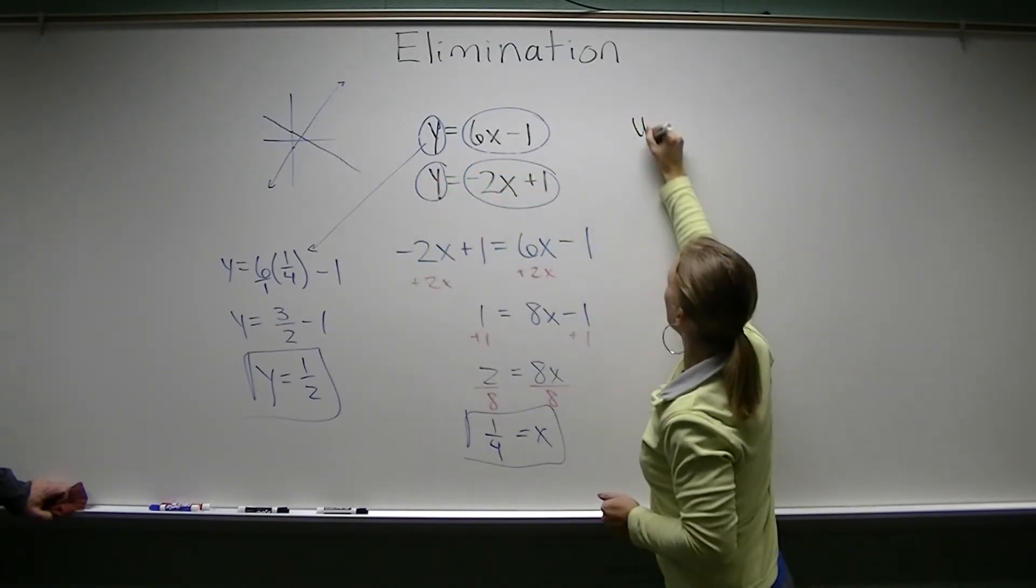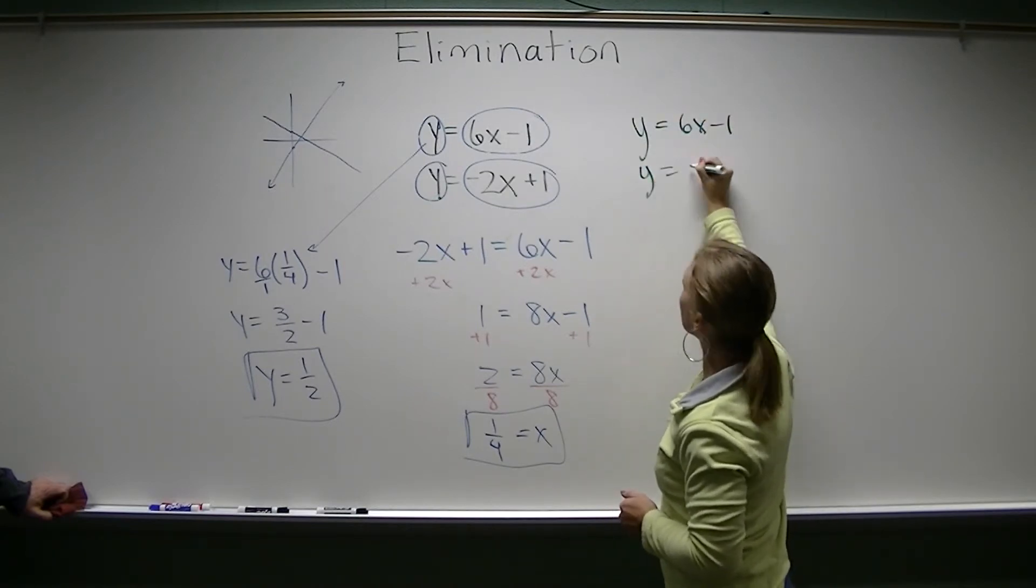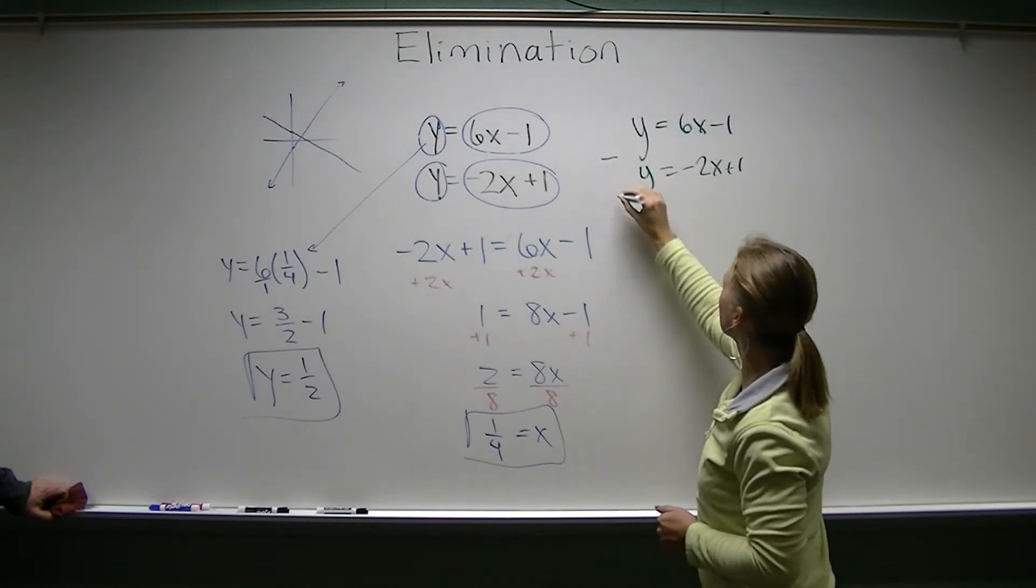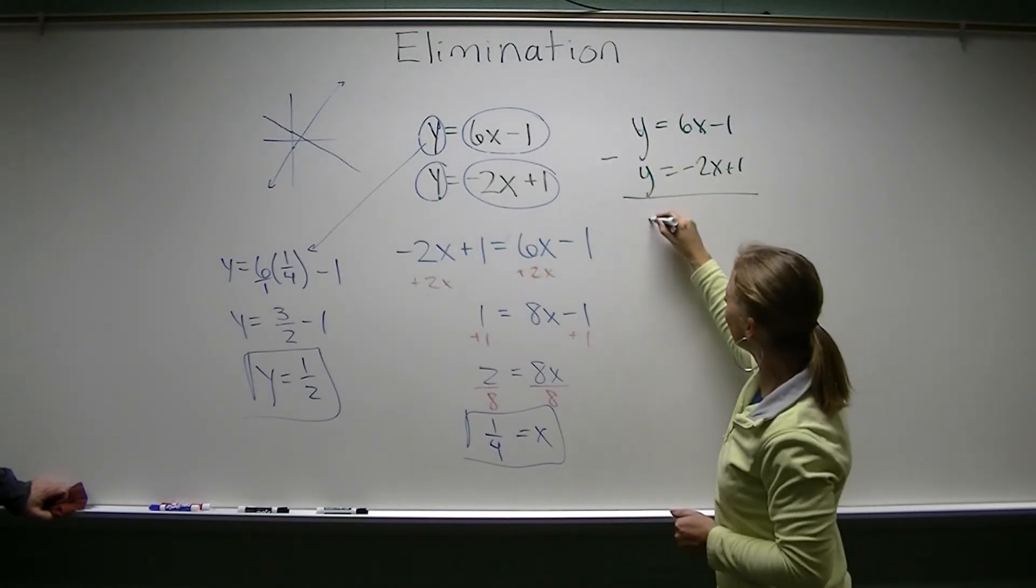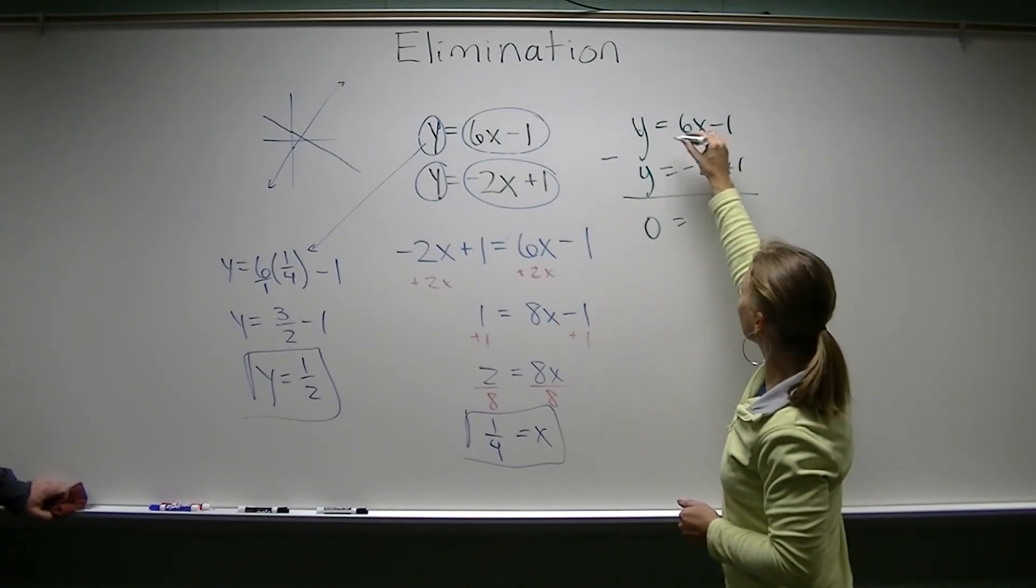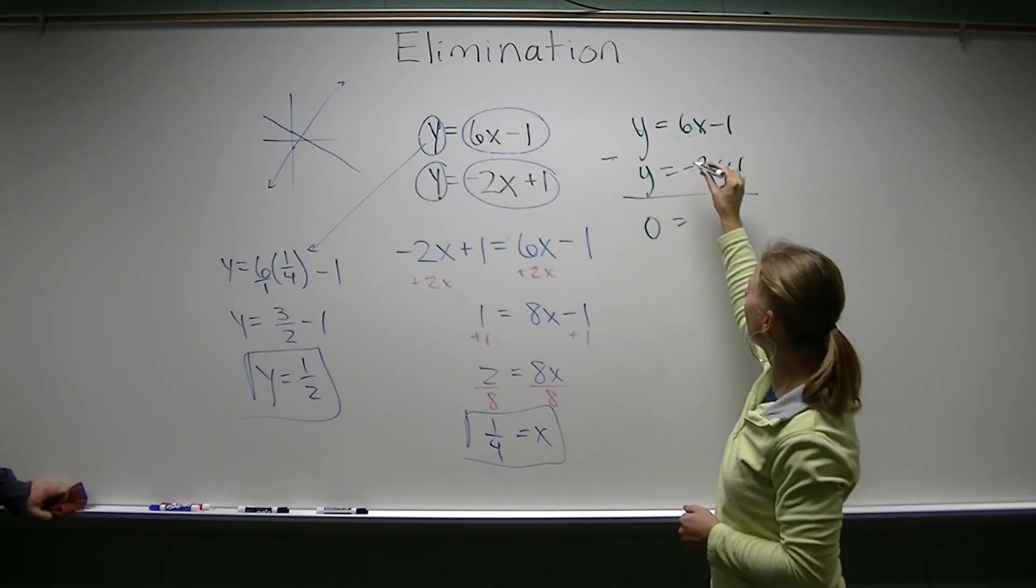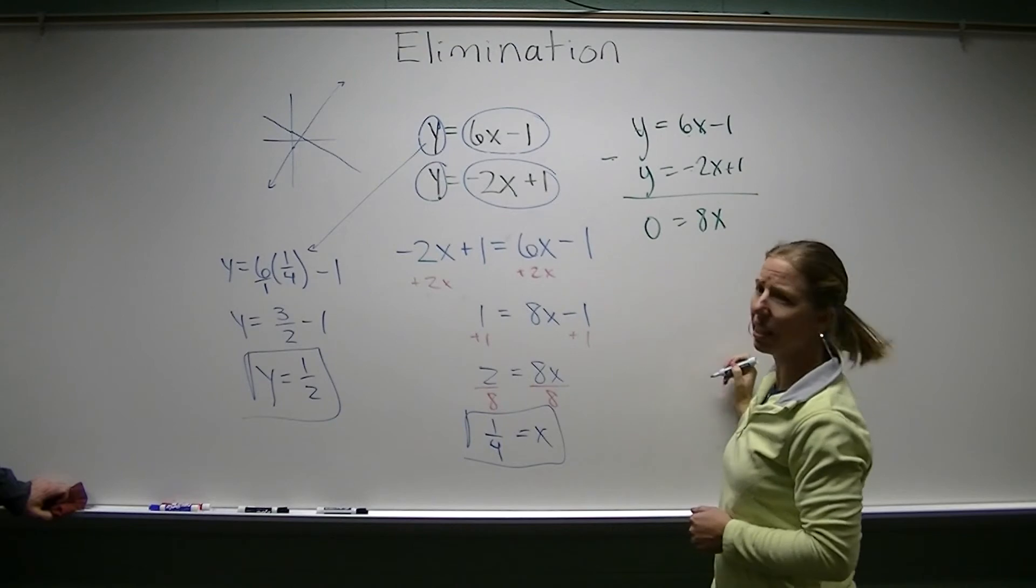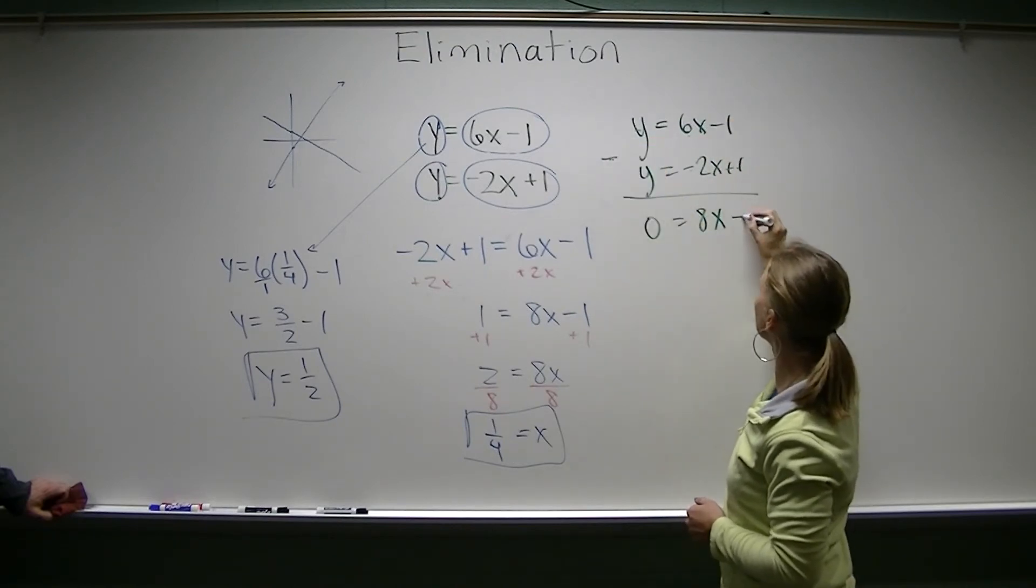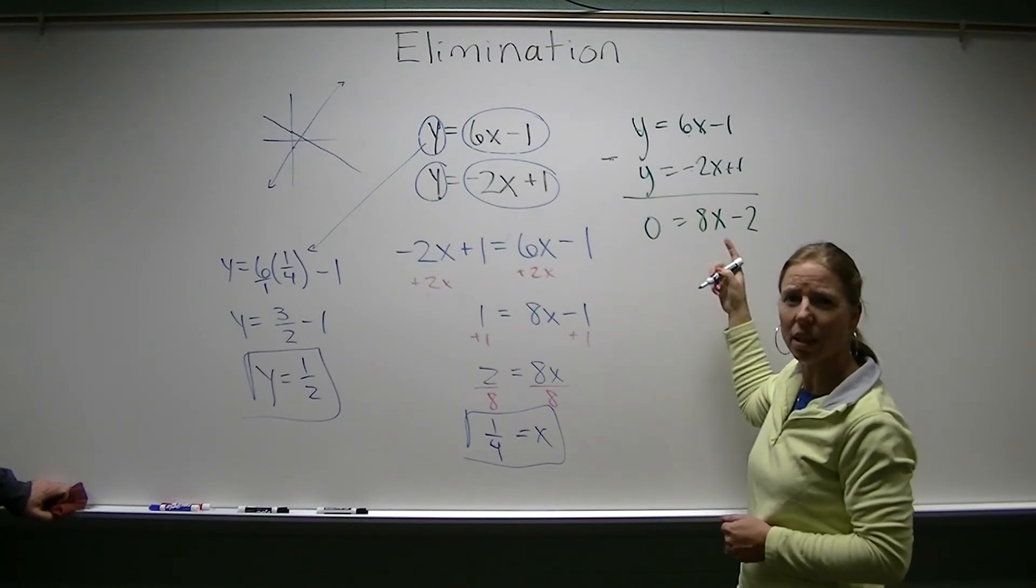So I'm going to look at this. y equals 6x minus 1 and y equals negative 2x plus 1 and subtract these. Well, y minus y does eliminate the y. It gives me 0. 6x minus the negative 2. We have to be careful of that. That really means I'm going to have this 8x right here, and I have negative 1 minus 1, which gives me this. This is workable. This is easy for us to do.